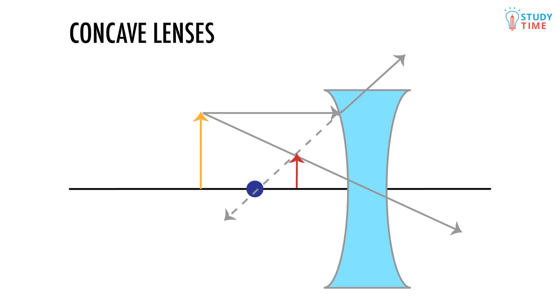If we extend the first ray back, we end up with this image. Since the image is not on the far side of the lens like you probably think it would be, we can say that the image that gets produced is virtual. Simply by looking at the diagram, we can also say with confidence that it is upright and it is diminished.